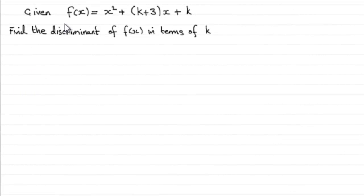For this part of the question, we're given f(x) = x² + (k+3)x + k and asked to find the discriminant of f(x) in terms of k. It's worth two marks.